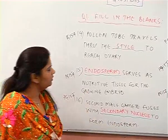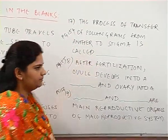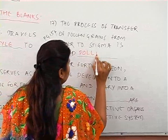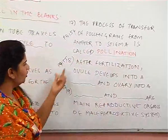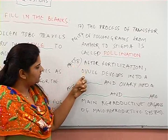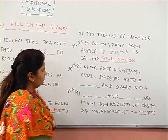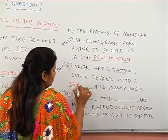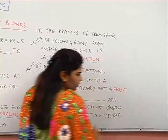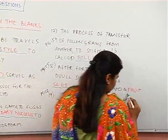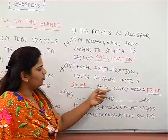The seventeenth question on page 154: the process of transfer of pollen grains from anther to stigma is called pollination. The eighteenth question from page 155: after fertilization, ovule develops into a seed and ovary develops into a fruit.